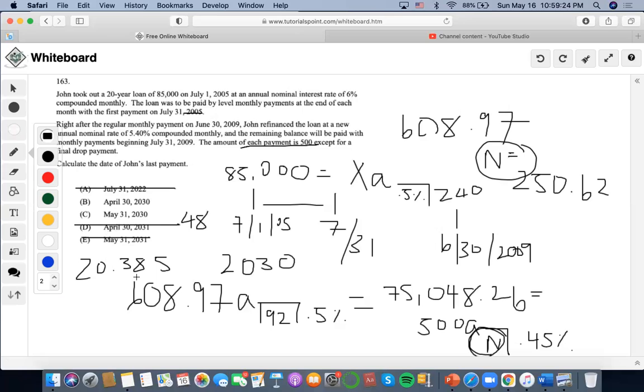Now, if 20 years have passed and we're up to 2030, we still have one more drop payment occurring that will compensate for 0.385. The question is, when will this drop payment occur? It will occur in the time interval of 251.